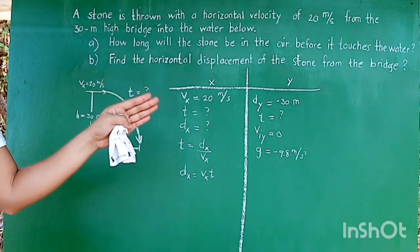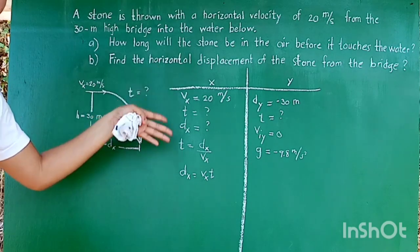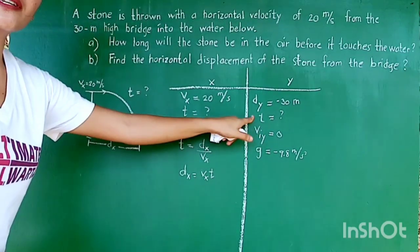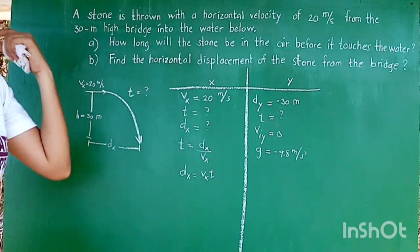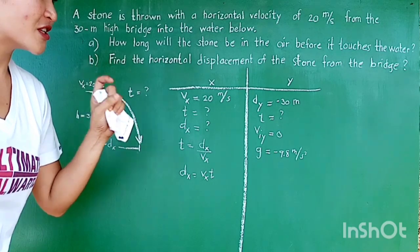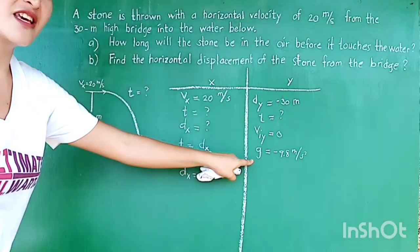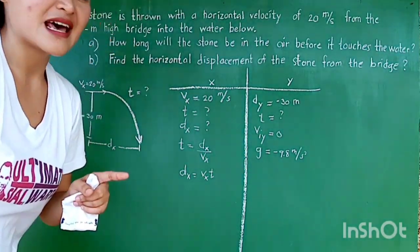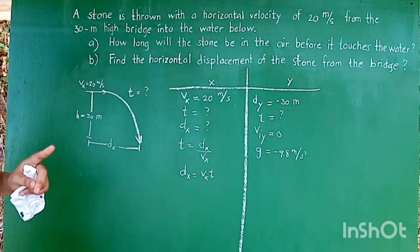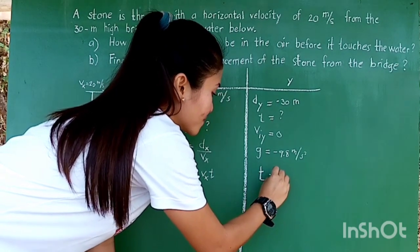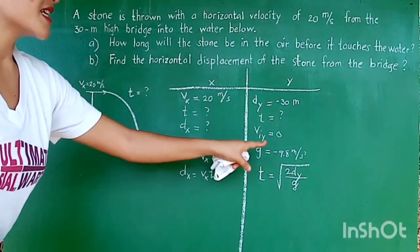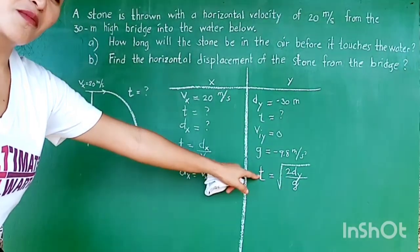Let's proceed to the Y component, if we can solve for something here that we can use to solve for the X variables. Given the DY, VIY, and G, can we solve for T? We have two formulas to solve for T. One, T equals VFY minus VIY over G. Note that in the formula, we are using VFY, VIY, and G. We only have VIY and G given here. We don't have the value for VFY. Therefore, we cannot use this formula. So the other option is T equals square root of 2 DY over G. We are given DY and we are given G. Therefore, this is the best formula for us to solve for T.